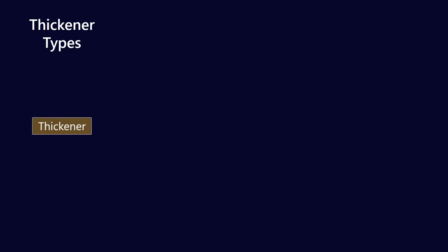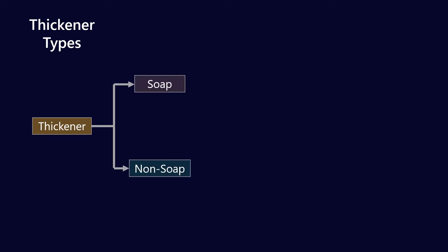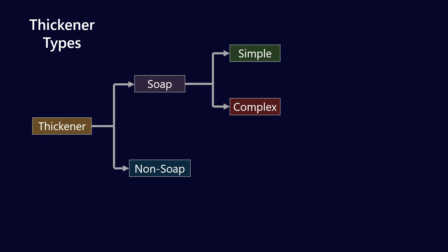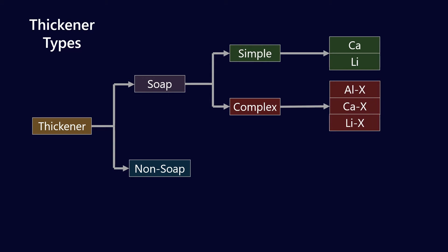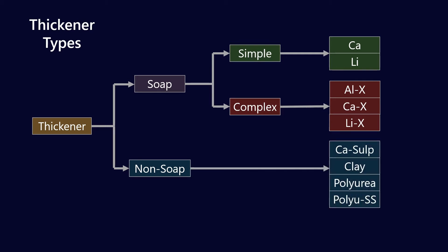Let's talk about thickener types. We split all thickener types into soap and non-soap technologies. Within soap we have simple and complex. Simple soaps include calcium soap, lithium soap, barium, and sodium. Complex soaps include aluminium complex, calcium complex, and lithium complex. Among the non-soap thickeners we have calcium sulfonate, clay, polyurea, and shear stable polyurea — split out because they have reasonably different properties.